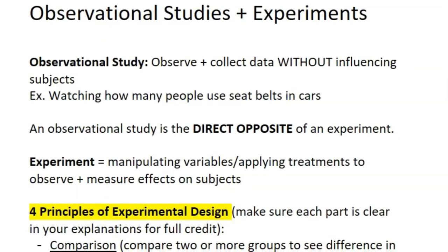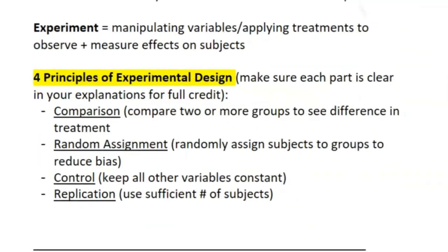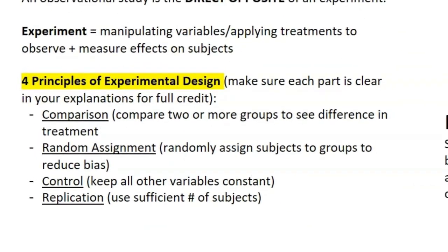The observational study is the direct opposite of the experiment. In an experiment, you are manipulating variables or applying treatments to observe and measure the effects on the subjects. When you conduct an experiment, you want to follow four principles, and make sure each of these principles is clear in your explanations for full credit.